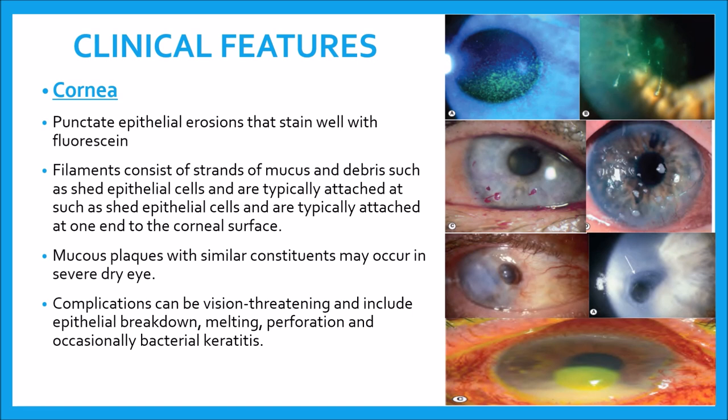The next feature involves the cornea. Punctate epithelial erosions (PEE) stain well with fluorescein as seen in the first picture here — this is very significant of punctate epithelial erosions. Filaments consist of strands of mucus and debris such as shed epithelial cells and are typically attached at one end to the corneal surface, as shown here.